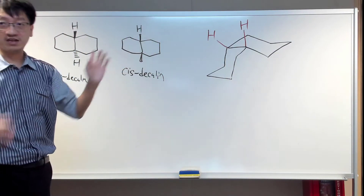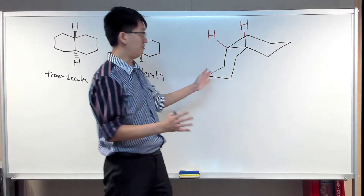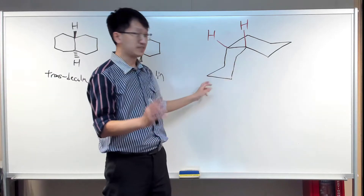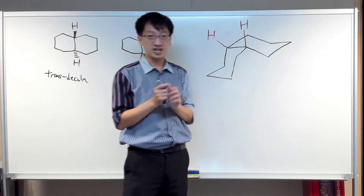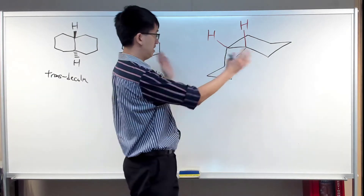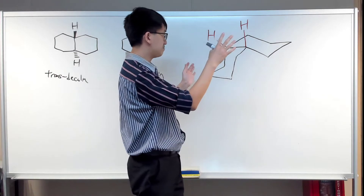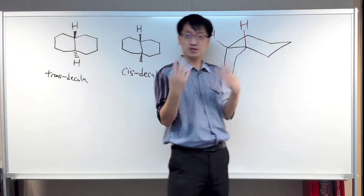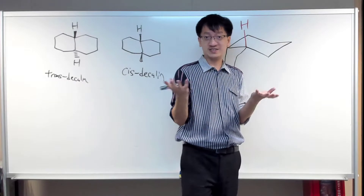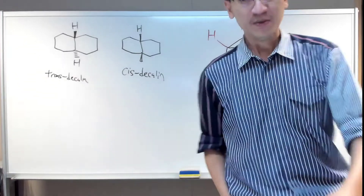So this is a cisdecaline conformation where both six-membered rings are in the chair conformation. Some of you will ask: can I have other answers? Is it possible to have other answers? Of course the answer is yes, because it depends on the perspective you choose.